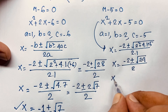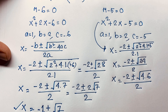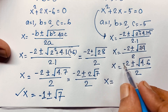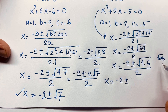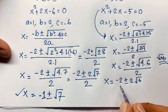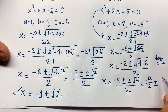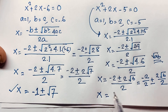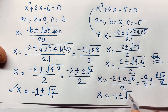Simplifying: square root of 24 equals square root of 4 times 6, which is 2 root 6. So x equals (negative 2 plus or minus 2 root 6) over 2. Separating the fraction: negative 2 over 2 plus or minus 2 root 6 over 2, giving x equals negative 1 plus or minus square root 6.